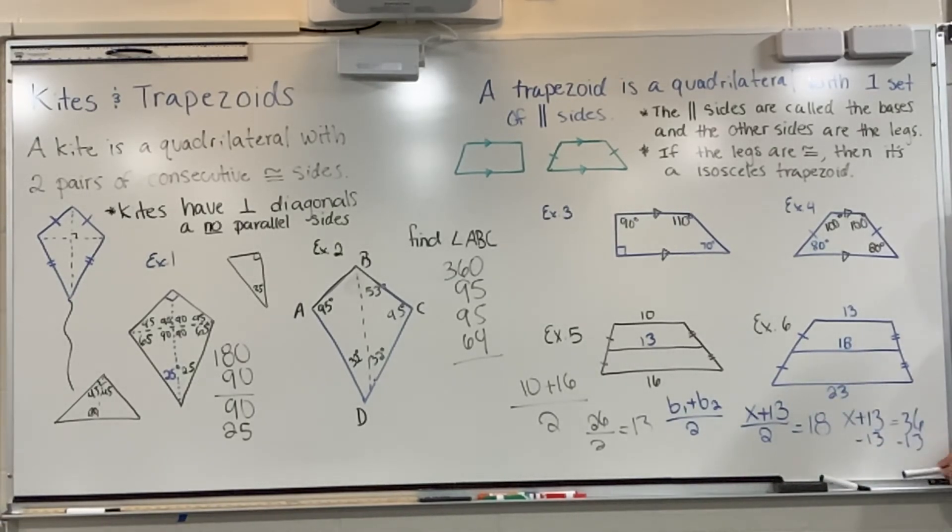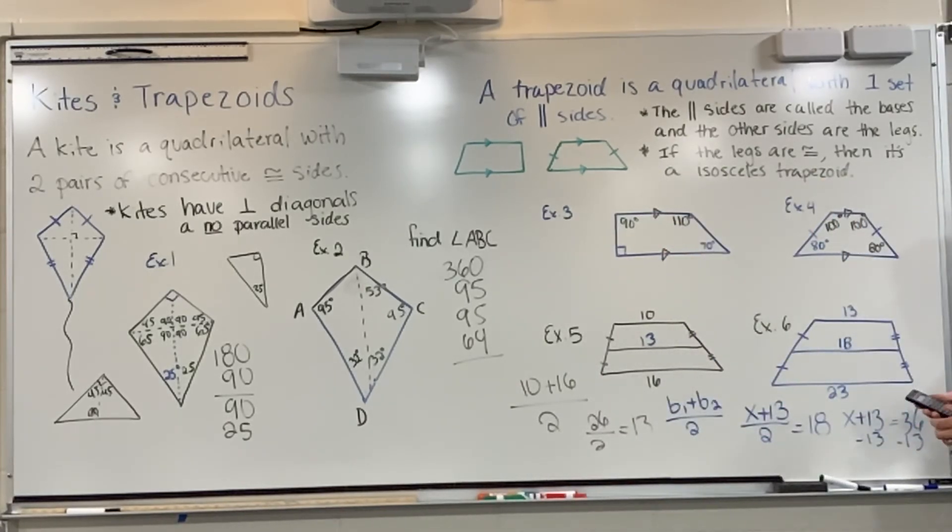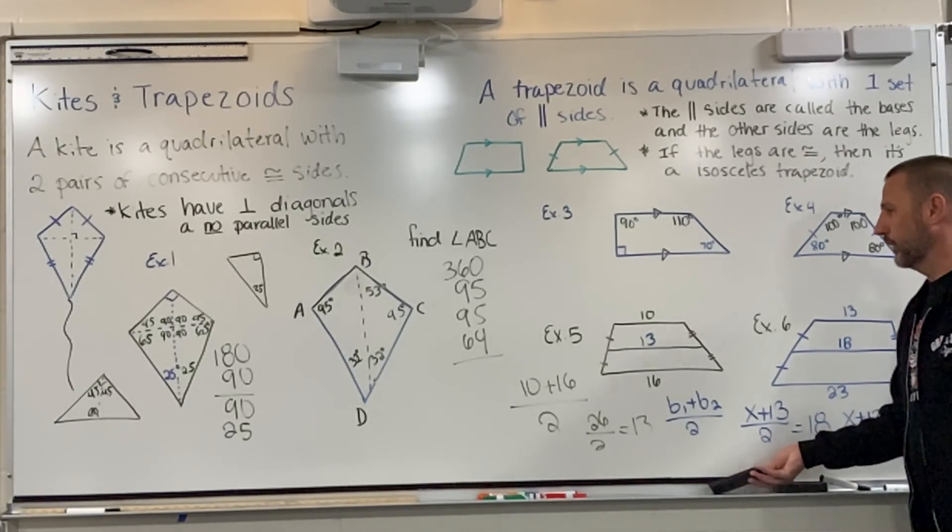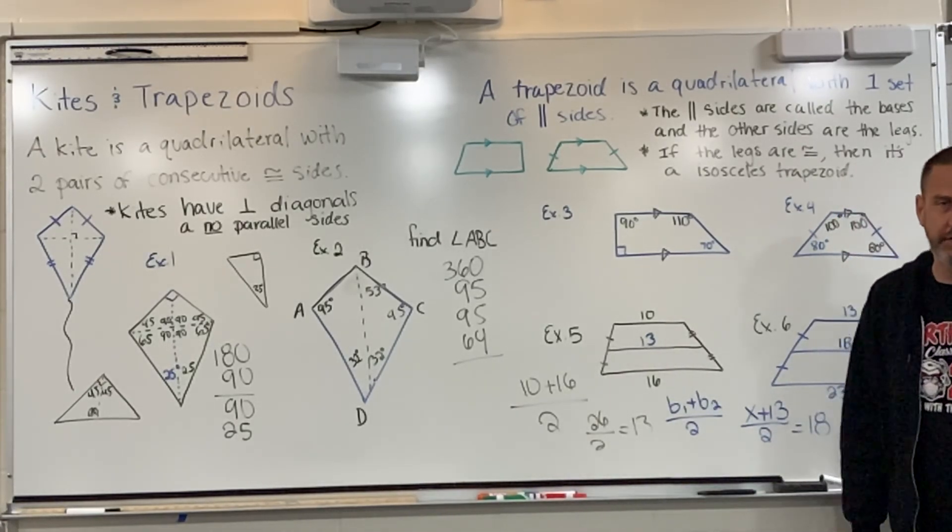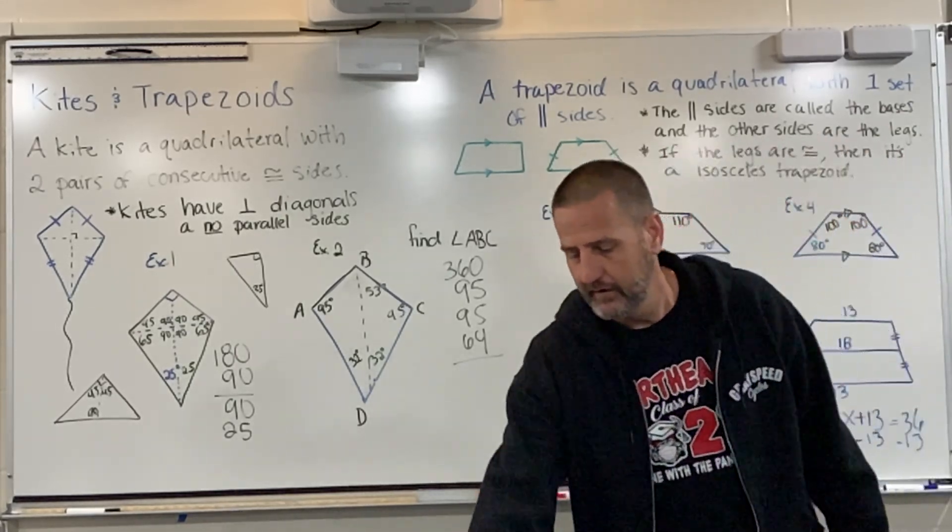And like I tell you over and over, check your work. Get a calculator. Just simply double check and say, 23 plus 13 equals 36, divide that in half, and what do you know? I get 18. All right, well, this is our first unit in the quadrilateral unit, so I hope this works out for you. I hope I've explained everything. Have a good day.